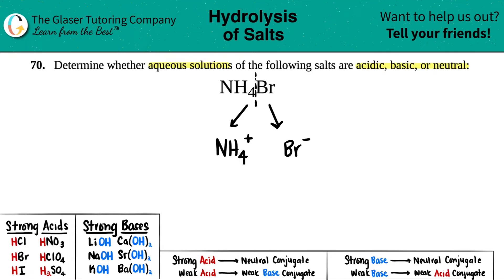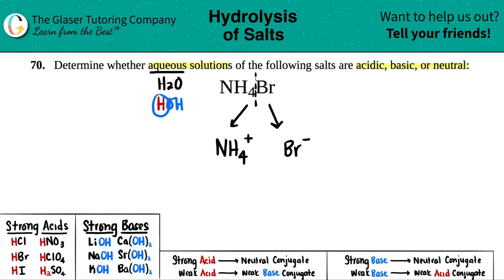These salts, when talking about acidic, basic, or neutral, are always going to be in aqueous solutions, which means you're dealing with water. Another way to write H2O is to talk about its ions — you have hydronium and hydroxide. HOH is the same thing as H2O. The hydronium is the acidic component, the positive charge, and the hydroxide is always the negative charge. So the H will always go with the negative, and the hydroxide will always go with the positive.